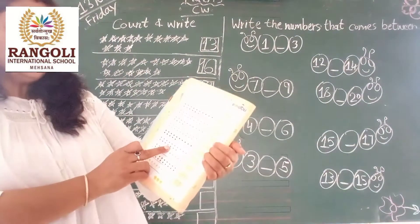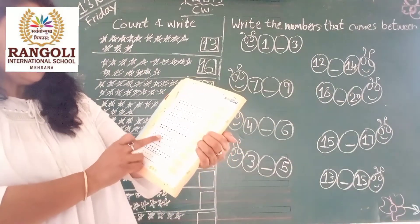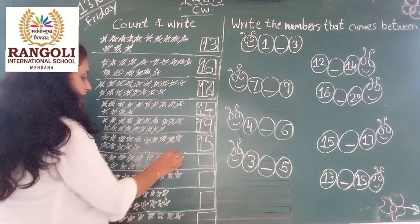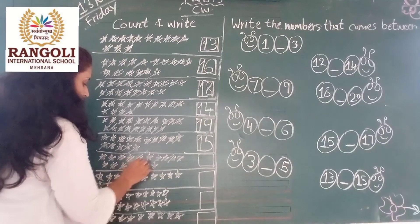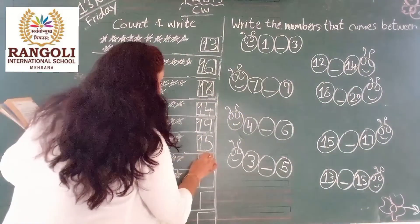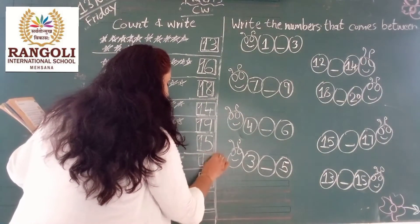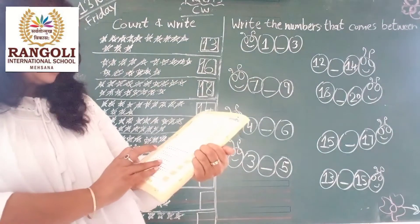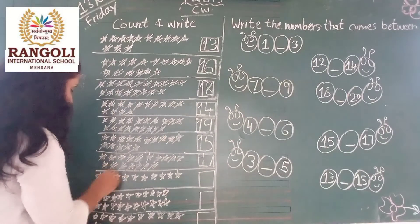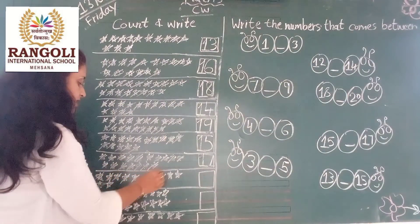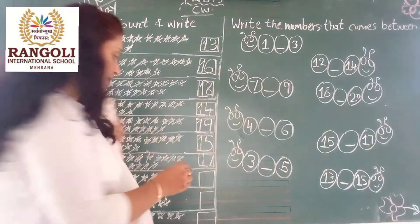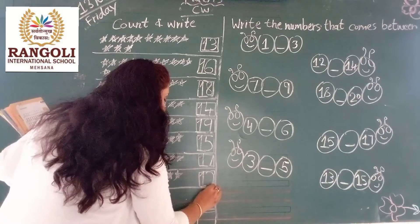Then how many purple stars? Come with me: 1, 2, 3, 4, 5, 6, 7, 8, 9, 10, 11, 12, 13, 14, 15, 17. How many? 17. So, right here write 17 number. Then right here, 1, 4, 5, 6, 7, 8, 9, 10, 11, 12. How many? 12 stars. So, right here write 12 number.